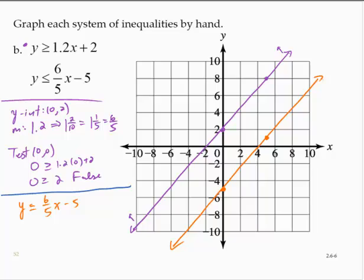Notice that since the slopes are the same and they have different y-intercepts, these are parallel lines. What if I test the origin again? Testing 0, 0, we'd have 0 is less than or equal to 6 fifths of 0 minus 5, which is 0 is less than or equal to negative 5, and that is false. So the solution would not contain 0, 0, and so if this were on its own, I'd be shading below that orange boundary.